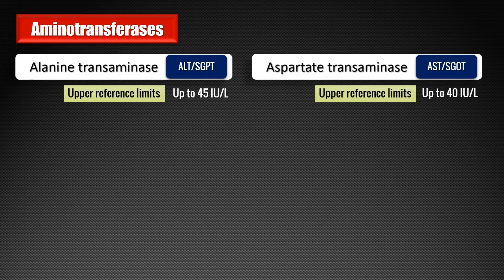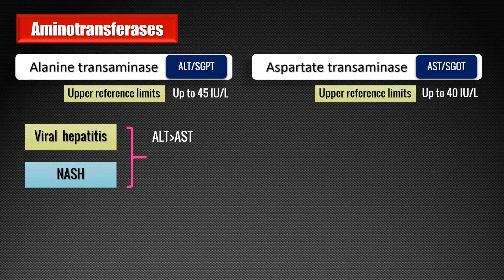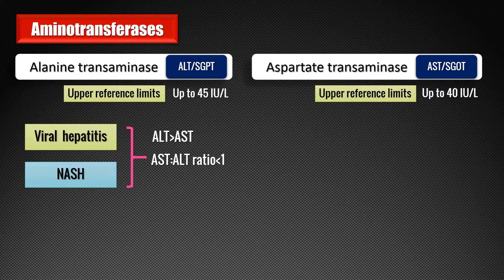Both these enzymes are elevated in hepatobiliary disorders in varying proportions. In case of viral hepatitis and non-alcoholic steatohepatitis (NASH), the elevation of AST is less compared to ALT — in other words, the concentration of ALT is more than AST. We can express this as an AST-to-ALT ratio less than 1, which holds for viral hepatitis and NASH.